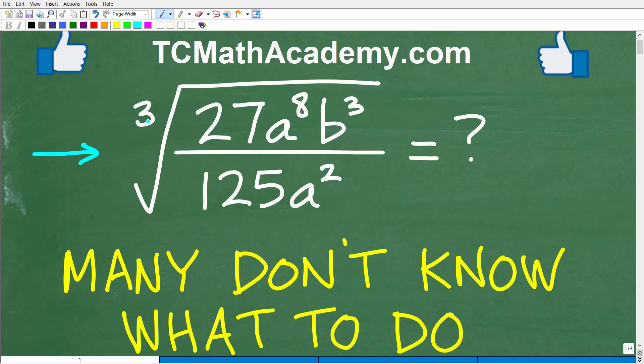And in this symbol in mathematics, some of you might call this a square root. Well, this is really not a square root. This is what we call a radical. Matter of fact, let me go ahead and tell you what the problem is here. We're trying to find the cube root of 27 times a to the eighth times b cubed, all of this over 125 times a squared. Now, if you have the algebra skills to figure this out, that is outstanding. Go ahead and put your answer into the comment section. I'll show you the correct answer in just one second.